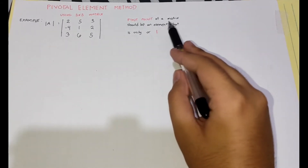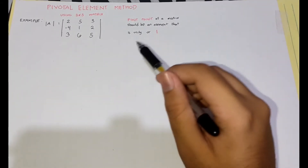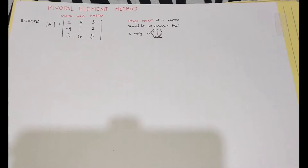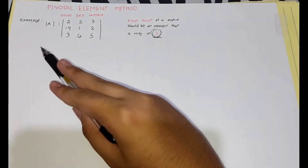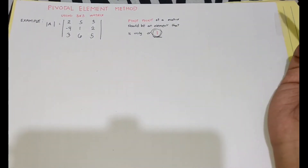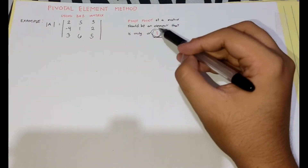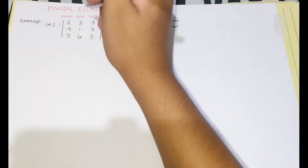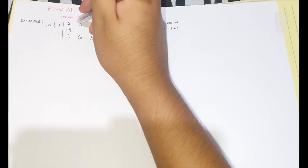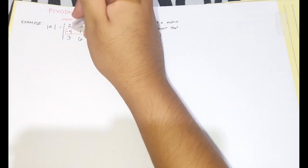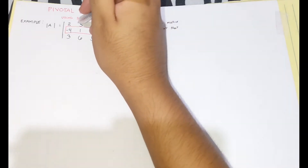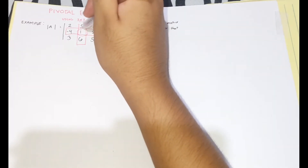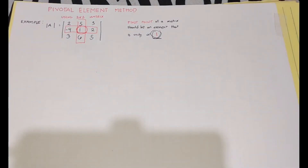Always remember that the pivot point of a matrix should be an element that is unity, or equal to 1. Here is an example of a 3 by 3 matrix. The pivot point is located in the middle, between the second row and second column of the matrix. Always remember that the pivot point should equal 1.